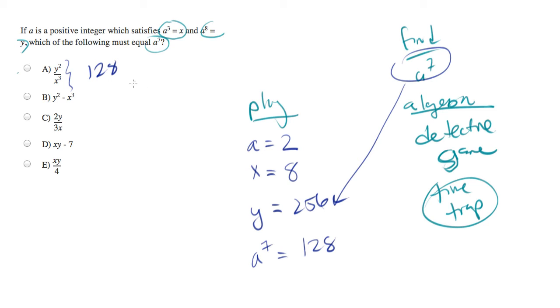You could, if you're pressed for time, pick that answer and move on. I'm going to check the others just to make sure I don't have a duplicate. So let's do 256 squared minus 8 cubed. And that number is huge, nowhere near what we're looking for. Let's do 2 times 256 divided by 3 times 8. And you get some fraction, which is wrong.